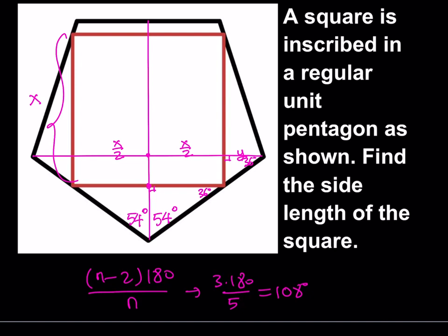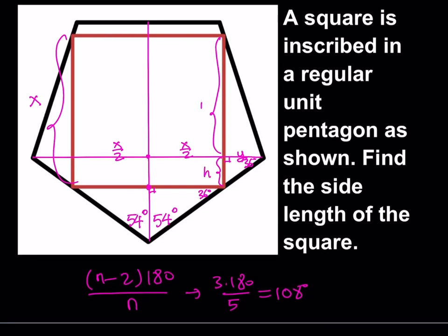Now I think we have everything we need, and we're going to be setting up some equations. But before that, we need to calculate more lengths. We don't know this one, and we don't know this one, but we do know that their sum is equal to x. Let's call this h and let's call this k. I'm going to calculate h and k, then put them together to make x.